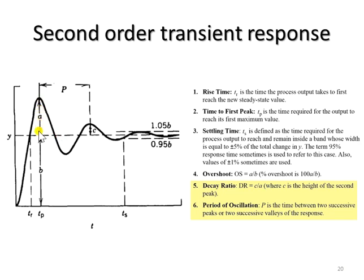To find the decay ratio, DR equals c over a, which means it will be less than 1. That is how to calculate the decay ratio.